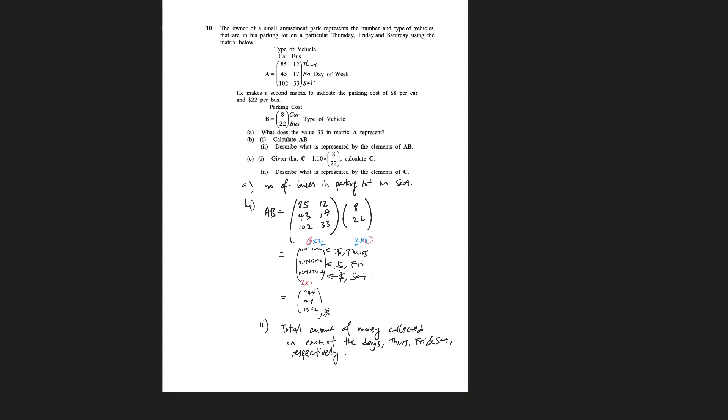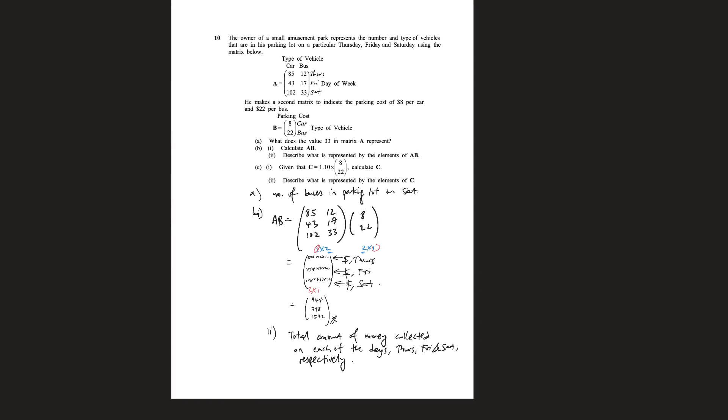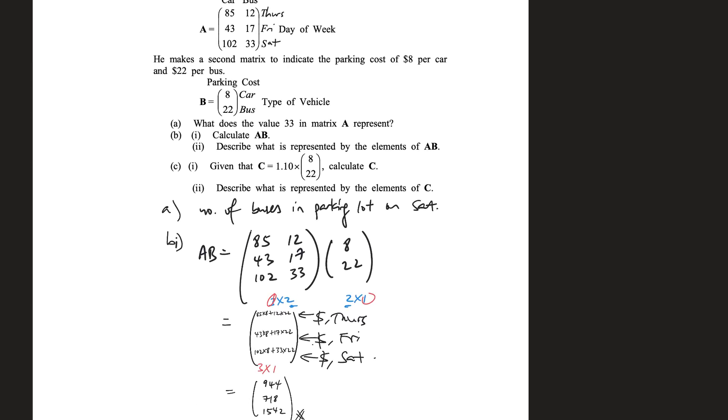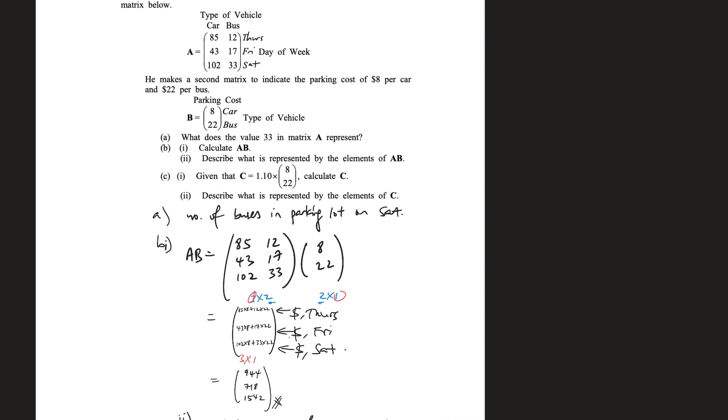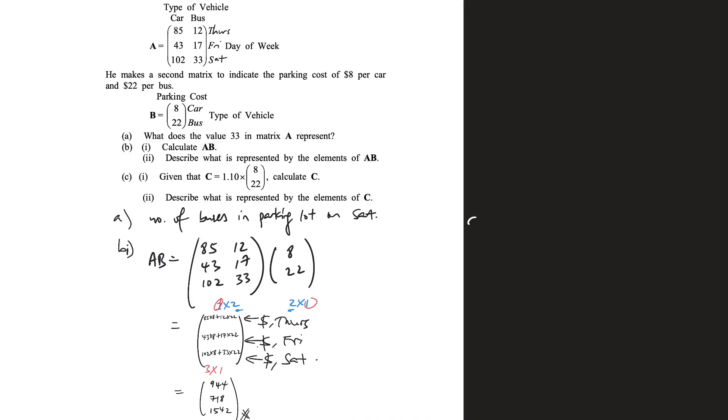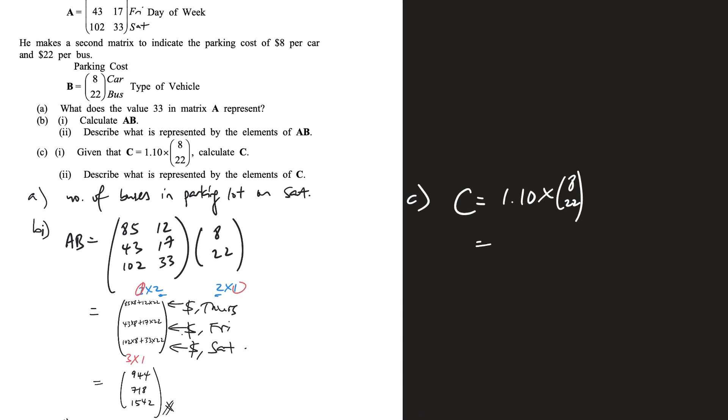Part C, given that matrix C is 1.10 times that, I'll calculate C. I'm just going to do it here. C is this. This is pretty straightforward, it's a number, we just multiply it in. So this is 8 times 1.10, and this is 22 times 1.10, and this simply gives me 8.8 and 24.2.